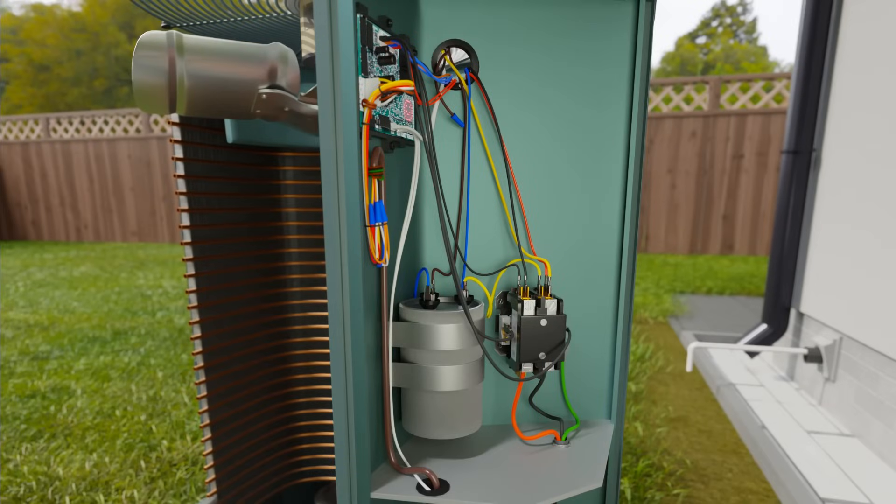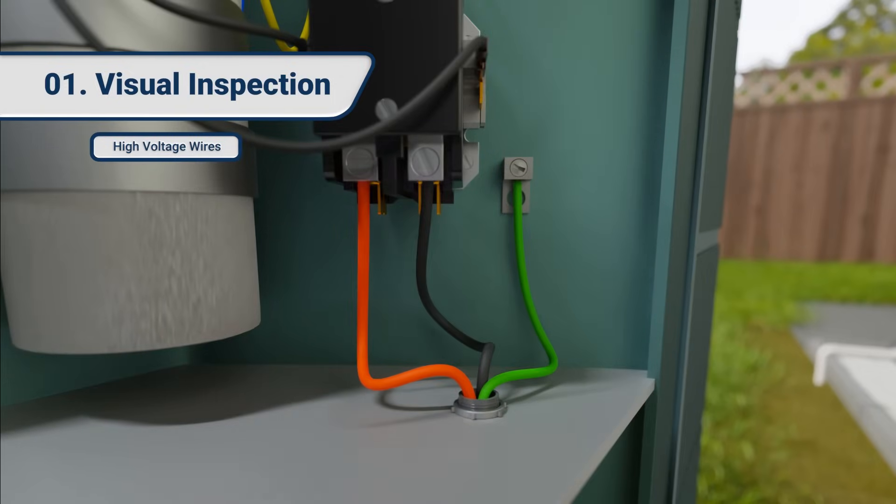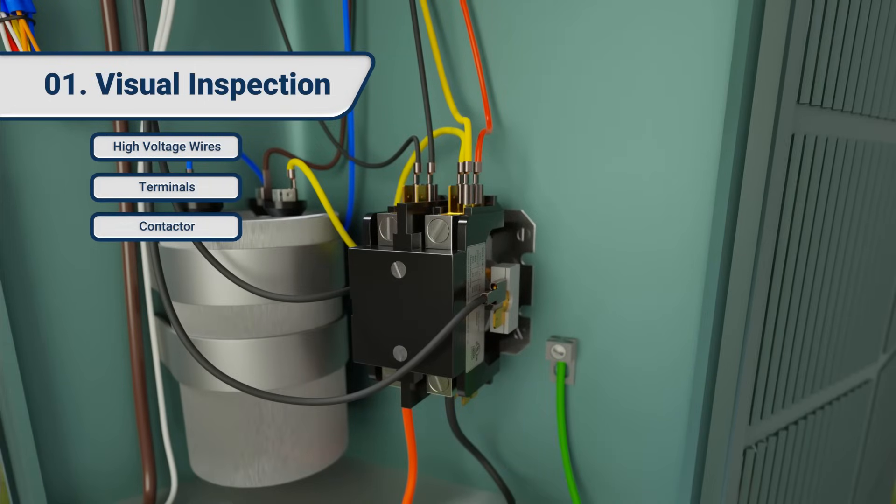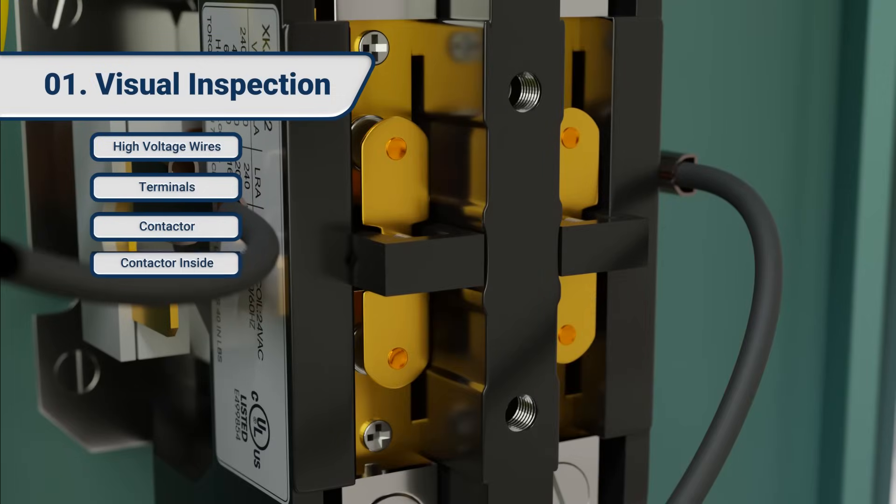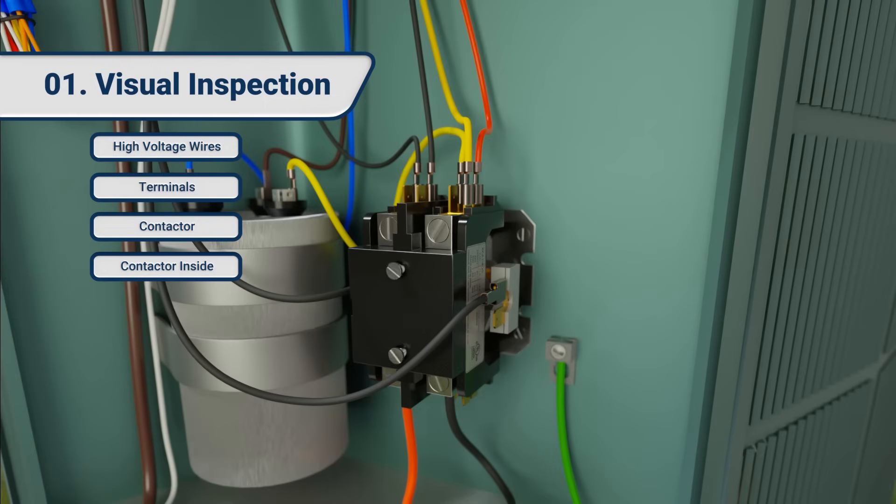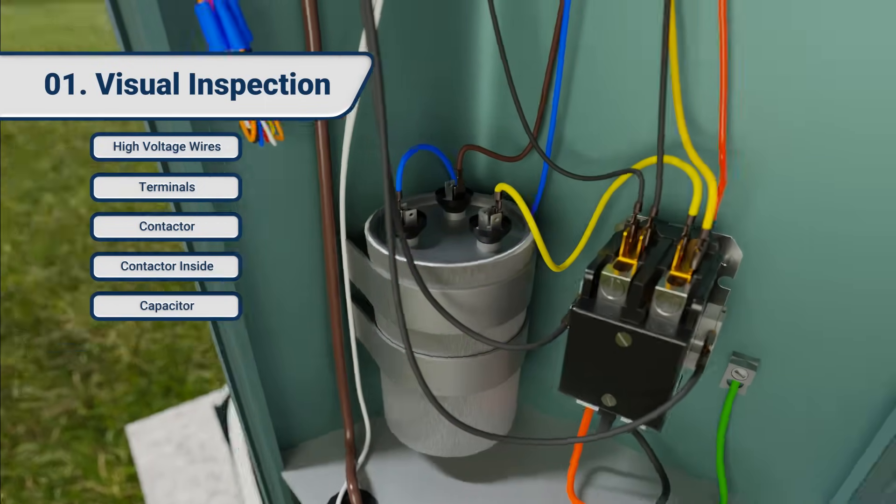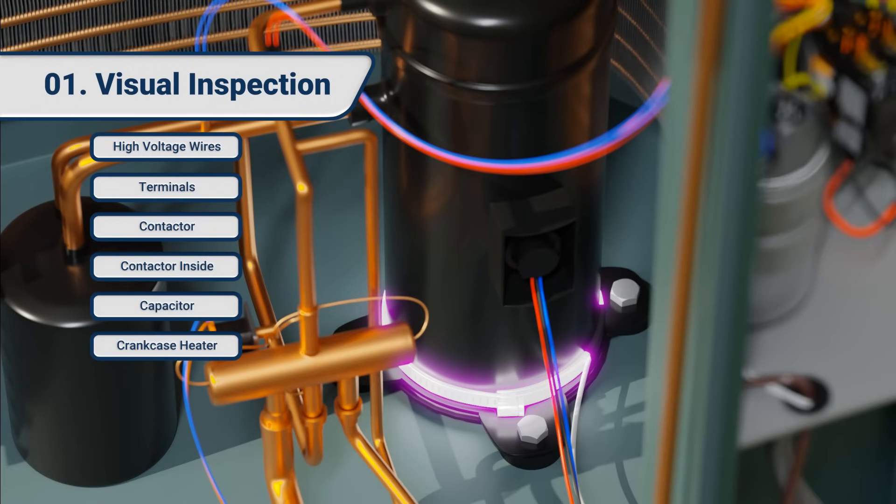So the first thing we need to do is a thorough visual inspection of all the high-voltage wires, terminals, contactor, capacitor, and crankcase heater.